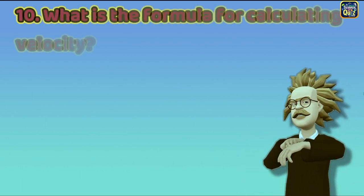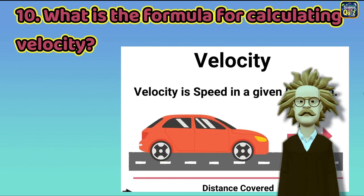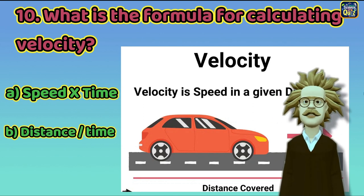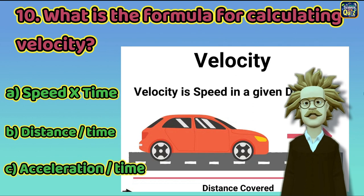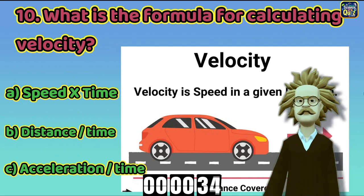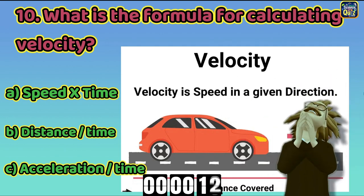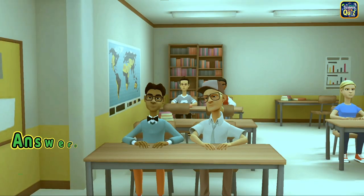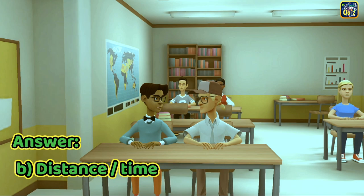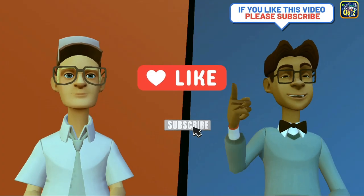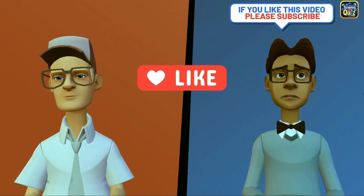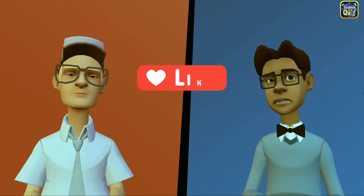Question 10: What is the formula for calculating velocity? A. Speed divided by time, B. Distance divided by time, C. Acceleration divided by time. The right answer is option B. Distance divided by time. If you like science quiz question and answer games, please subscribe to our Cartoon Science School now and don't forget to turn on the bell icon and hit the like button.